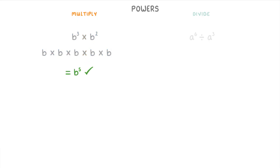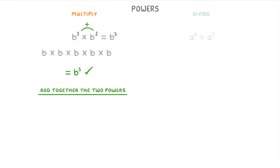Instead of writing all of this out every time, the shortcut is to just add together the two powers. So add together the three and the two to get five as our new power. And we can show the working out for this as b cubed times b squared equals b to the power of five.